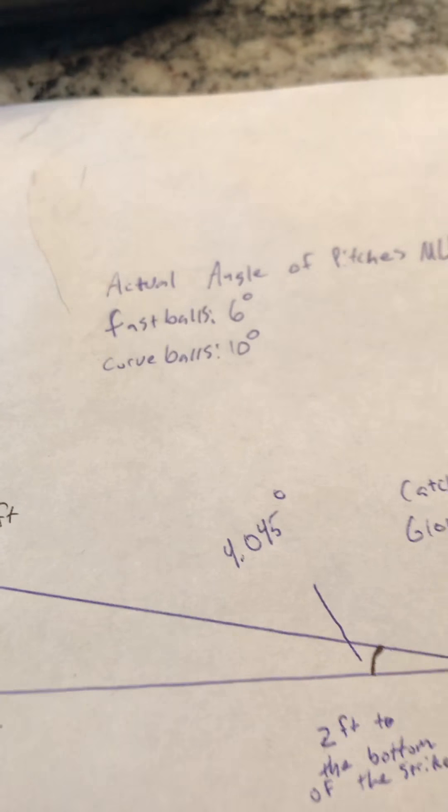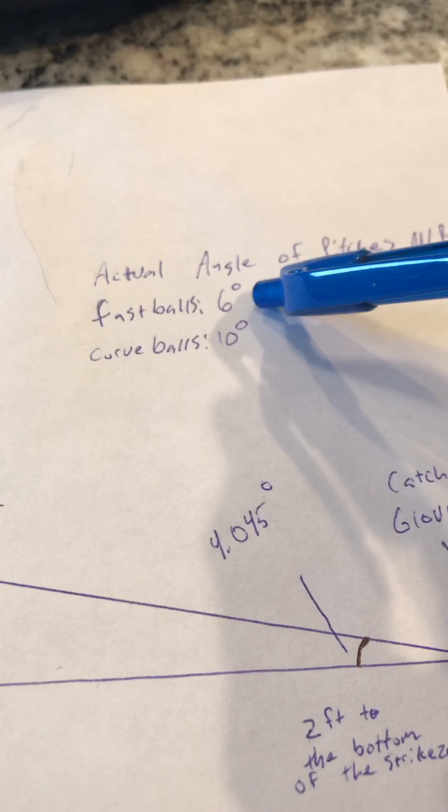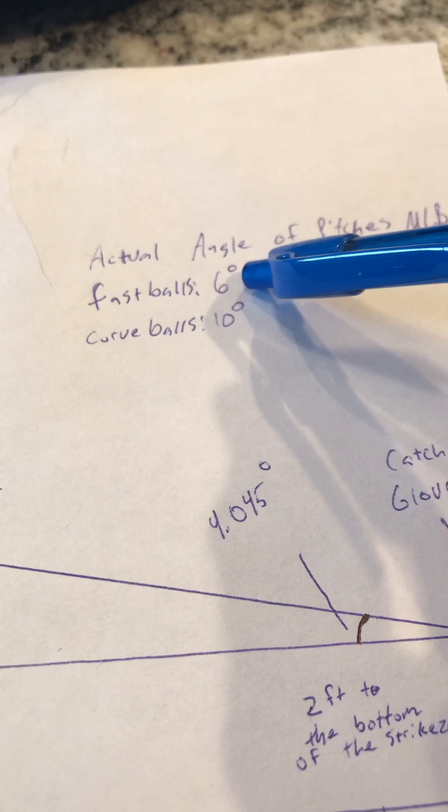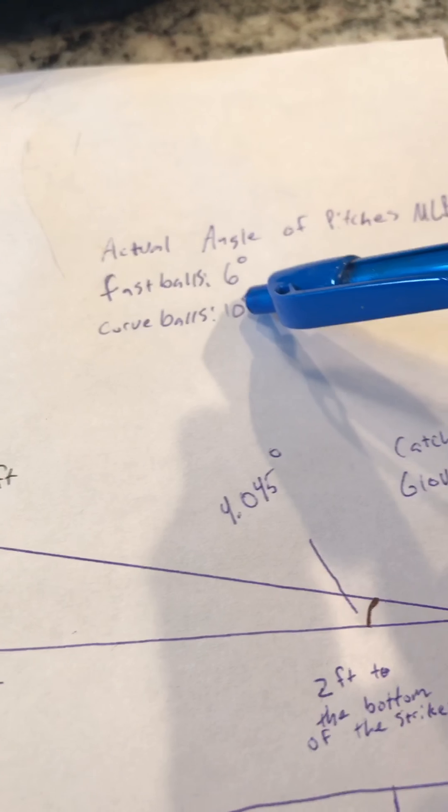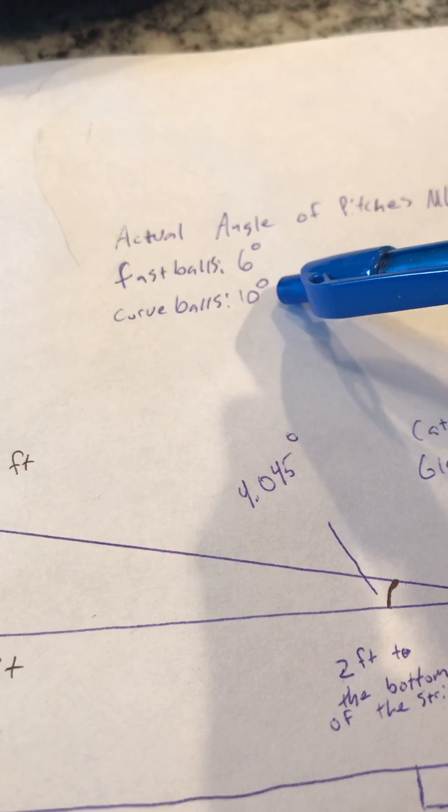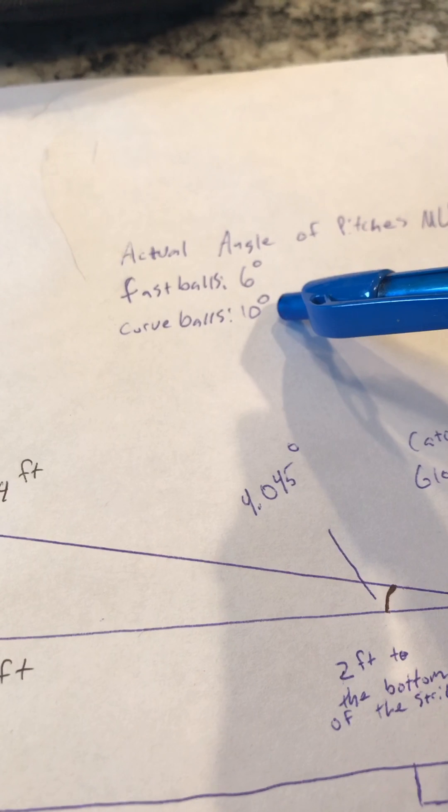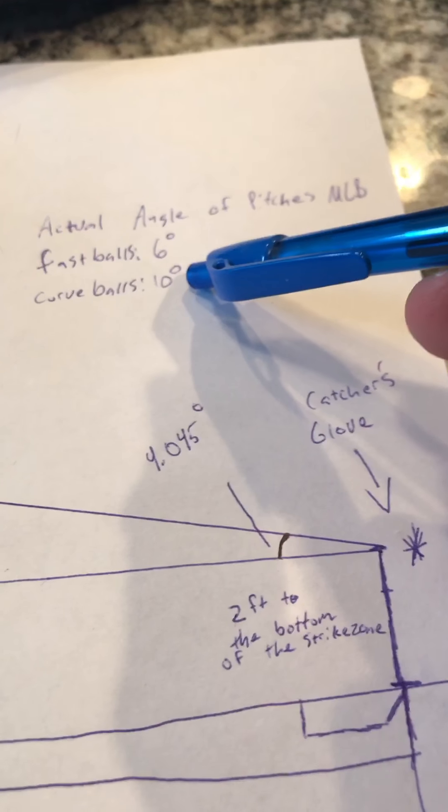And that's if the ball were going straight. But based on MLB data, we know that balls are coming down at a 6 degree angle. This number is because of gravity, of course. And curveballs are going to come at a 10 degree angle. So, swinging down really doesn't make a whole lot of sense.